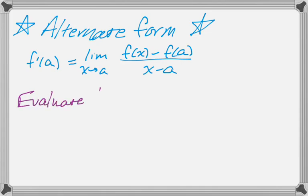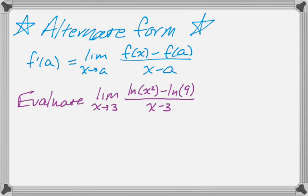So, for example, it allows you to do limits that otherwise you probably wouldn't be able to figure out. So the limit as x approaches 3 of natural log of x squared minus natural log of 9 all over x minus 3. So I recognize that this is f prime of 3 for the function f of x equals natural log of x squared. And if I don't recognize that, I don't know what I'm going to do.